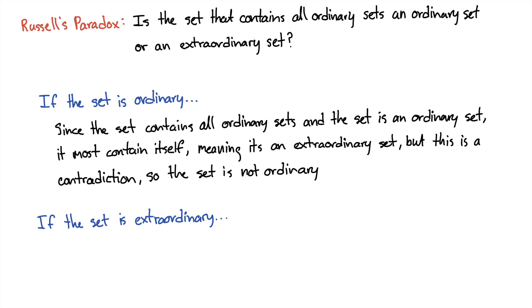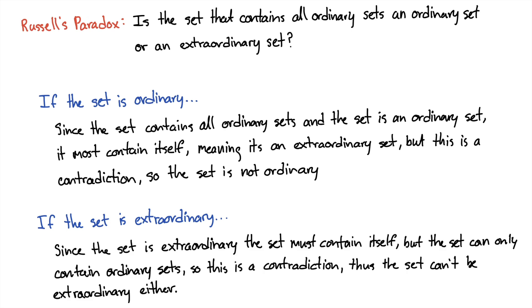Next, if the set is extraordinary, since the set is extraordinary, the set must contain itself. But the set can only contain ordinary sets, so this is a contradiction. Thus the set can't be extraordinary either.